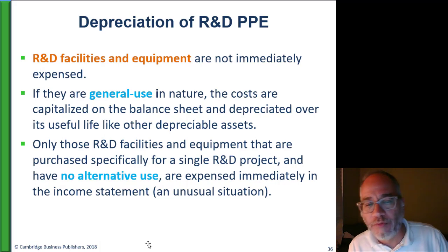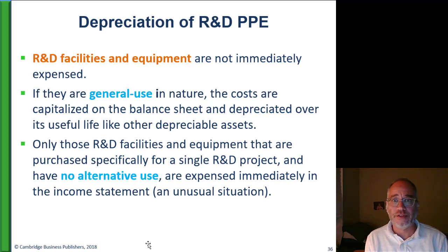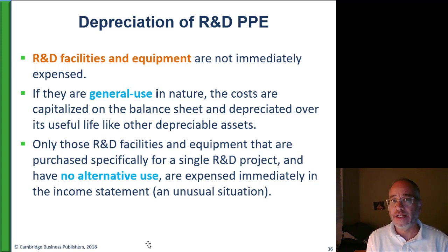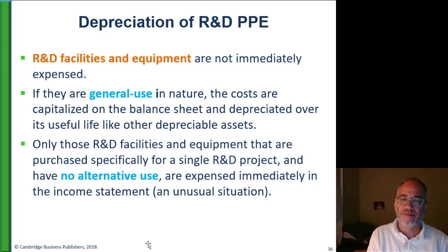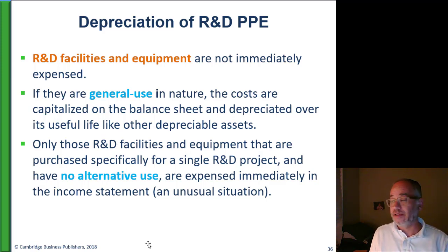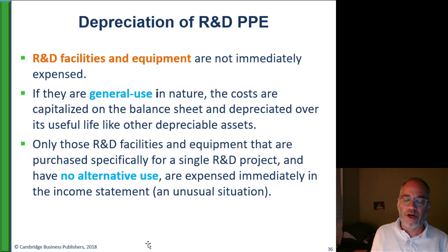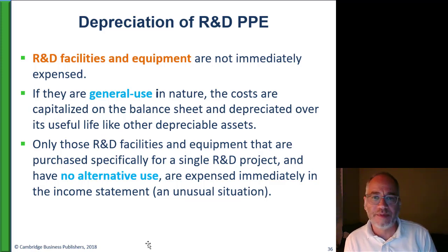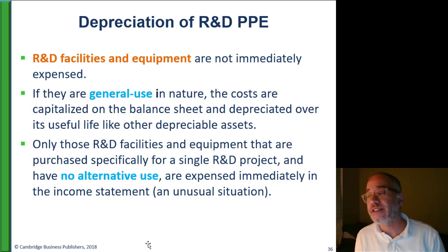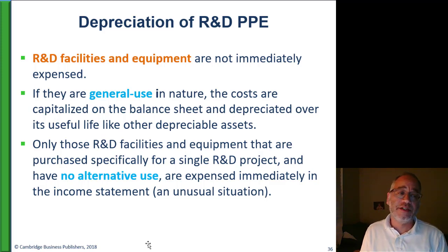With research and development, R&D costs are expensed. If you buy equipment or other long-lived assets for R&D, they can usually be capitalized, provided that they have other uses. But if they don't have other uses — if they're specifically for the R&D project and there's nothing else you can do with them — then they have to be expensed. So if you build a tower to conduct an R&D experiment and there's nothing else you can do with that tower besides this R&D experiment, even though the tower could last for 10 years, it's going to be expensed.